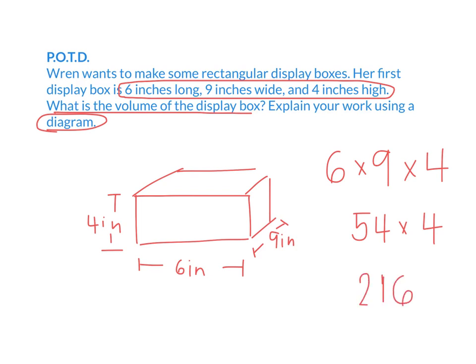That's most of my answer, but I need to label the units. What kind of measurements are we measuring the length, width, and height in? Inches. We had 6 inches, 9 inches, and 4 inches — three dimensions. That's why we call them 3-dimensional, or 3D objects. When we're talking about measuring the volume of 3D objects, what kind of units do we use? Cubic. So we have 216 cubic inches.